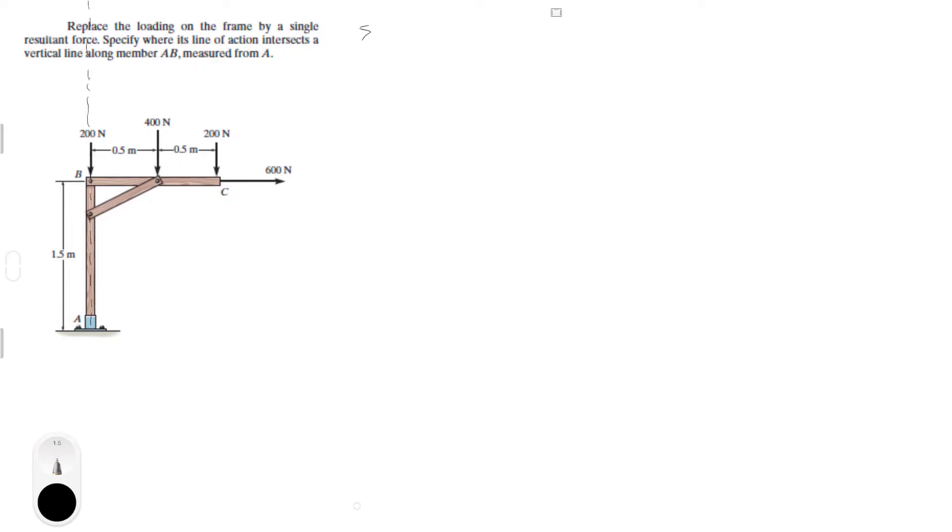You know that the first thing you have to do is find the resultant force which is the sum of the forces in the X and the sum of the forces in the Y. So the sum of the forces in the X are just this 600 Newton force. Sum of the forces in the Y are these three forces. This is assuming the right is positive and this is assuming up is positive.